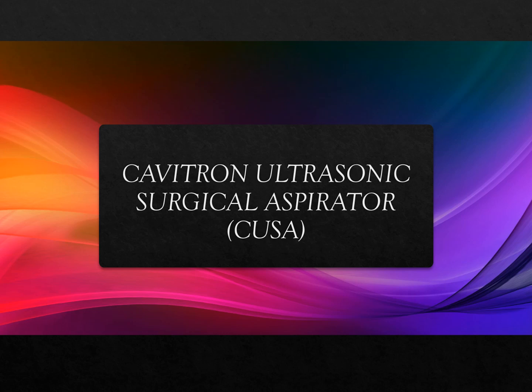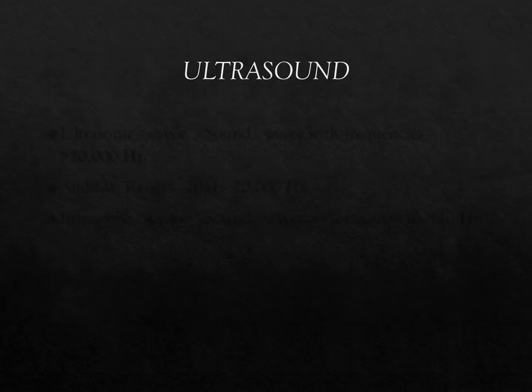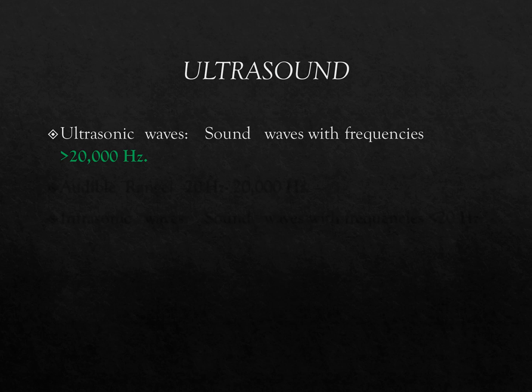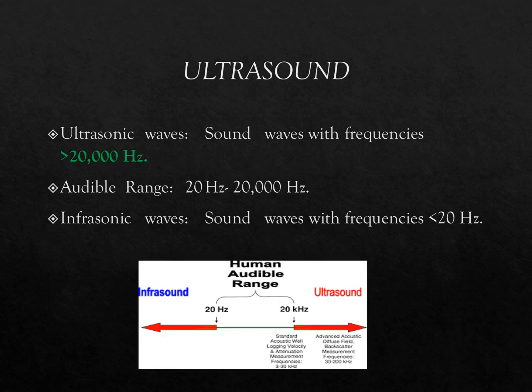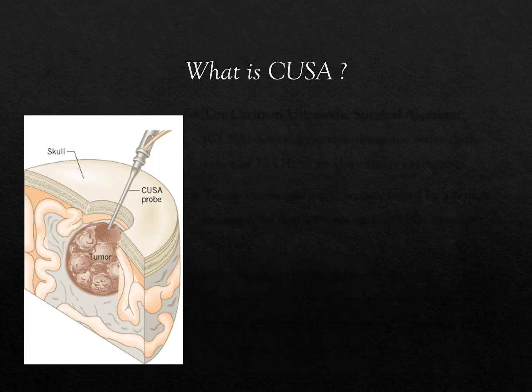Cavitron Ultrasonic Surgical Aspirator, or CUSA. Before going to CUSA, we have to know what an ultrasound is. Ultrasonic waves are sound waves with a frequency of more than 20,000 hertz, while the audible range is between 20 to 20,000 hertz, and infrasonic waves are sound waves of frequency less than 20 hertz. This diagram shows infrasonic waves, the human audible range, and ultrasound above 20,000 hertz.